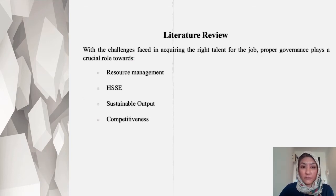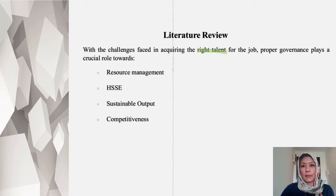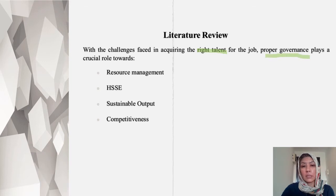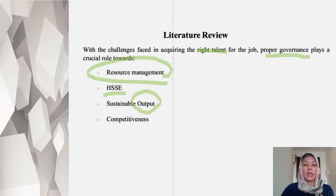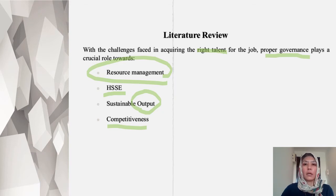In our literature review, we actually looked at four main components. What are the challenges of acquiring the right talent, the right talent at the right time for the right role? How does proper governance play the role towards: number one, resource management; number two, health, safety, security, and environment; number three, the output; and number four, how can they remain competitive even in times of economic crisis.